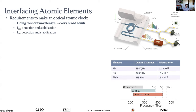For instance, rubidium at 780 nm / 384 THz, or strontium just below 700 nm, shows a huge increase in system stability. Going to shorter wavelengths means an octave becomes much broader. A comb at 1550 nm is much narrower than a comb that must reach the 429 THz strontium transition.